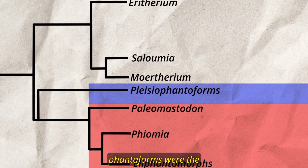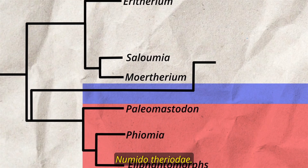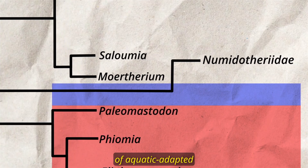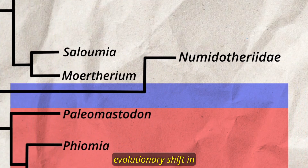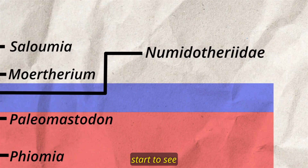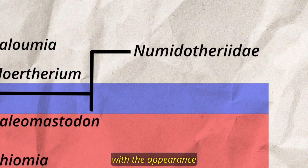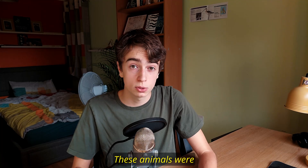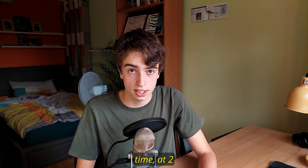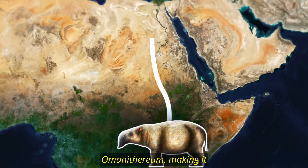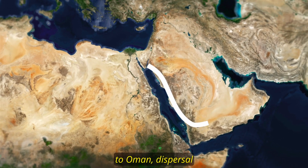The earliest family of plesiophantiforms were the Numidotheriidae, whose aquatic adaptations mark a key evolutionary shift towards a semi-aquatic lifestyle. We really start to see similarities with elephants with the appearance of the Badiotheridae, 37 million years ago in the late Eocene. These animals were among the largest to walk the Earth at the time, at 2 meters and 2 tons. Badiotheridae were the first proboscideans to leave the African continent, with the genus Omanotheria making it all the way to Oman.